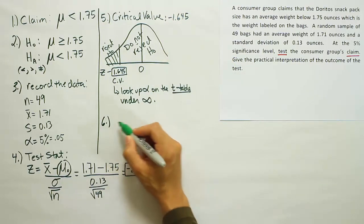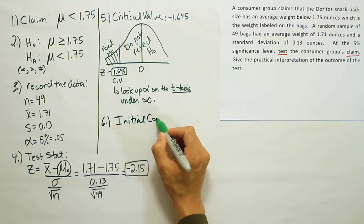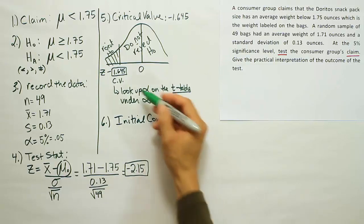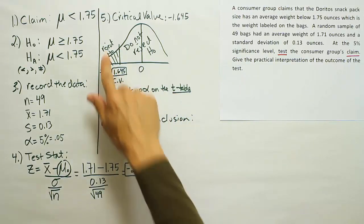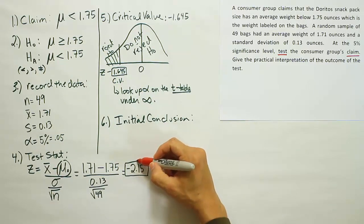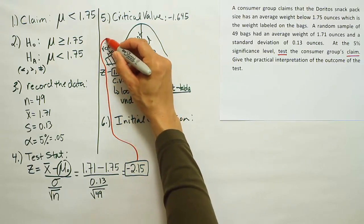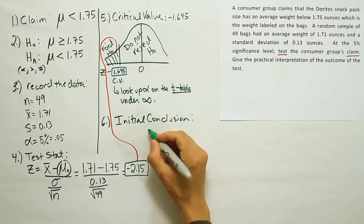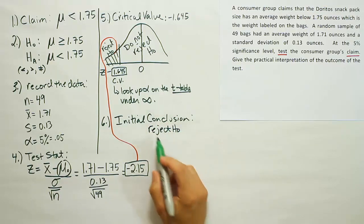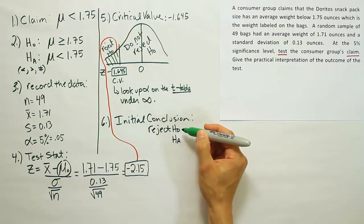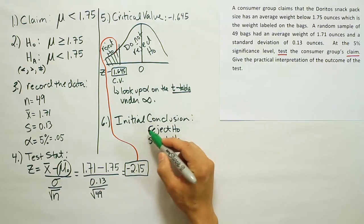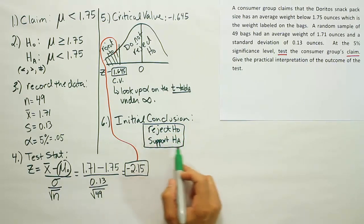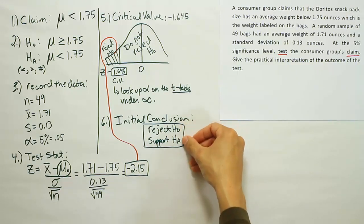Step six is to form our initial conclusion by comparing the critical value to the test stat. Our test stat, negative 2.15, is to the left of the critical value negative 1.645 on the number line, which means it falls in the rejection region — so we reject H0. If you reject H0, you are always supporting HA; they go hand-in-hand. If you do not reject H0, you are not supporting HA.